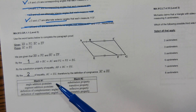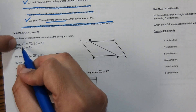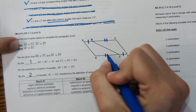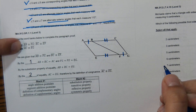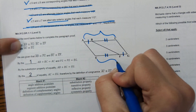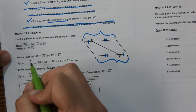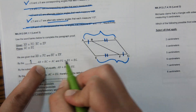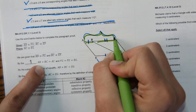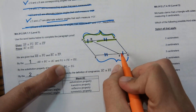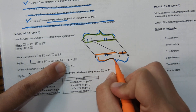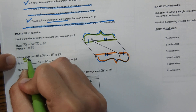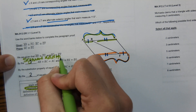The proof states: given AB is congruent to FG, and BC is congruent to EF. Prove that AC is congruent to EG. We are given that these segments are congruent. Then AB plus BC equals AC, and FG plus FE equals EG — that is the Segment Addition Postulate. So the reason for step one is the Segment Addition Postulate.